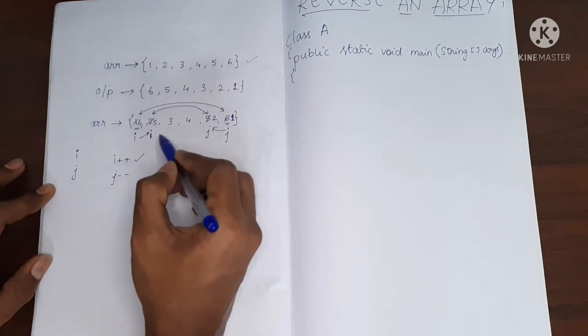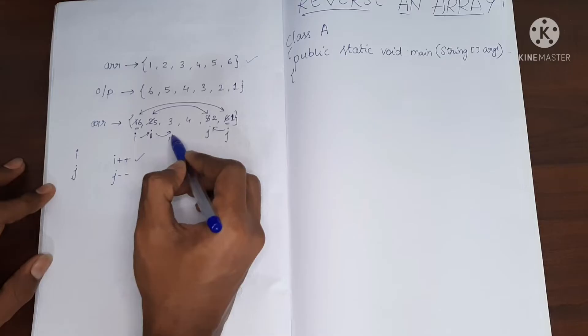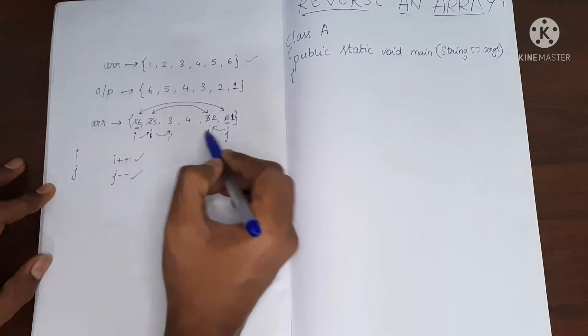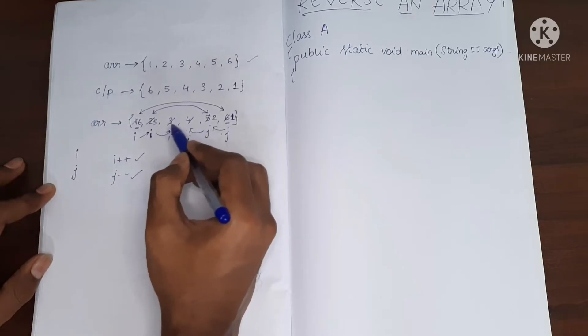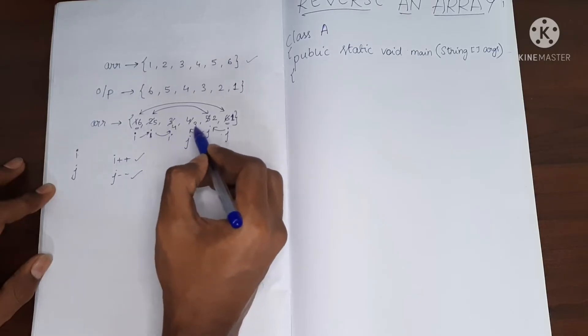Again, i plus plus, i will move over here. j minus minus, j will move over here. Now I'm going to swap these two. Four will come over here and three will come over here.